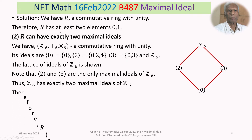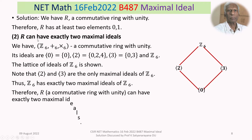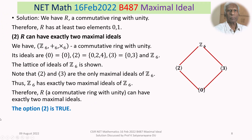Therefore option 2 is true: a commutative ring with unity can have exactly two maximal ideals.